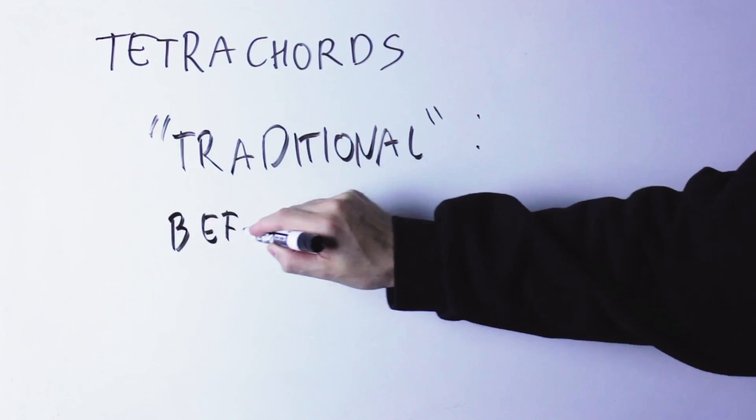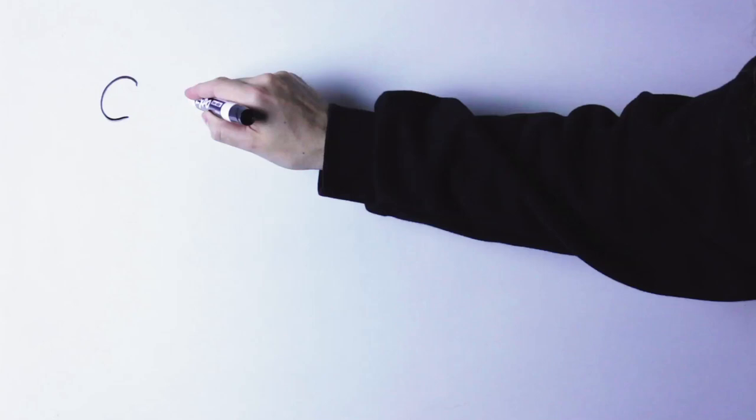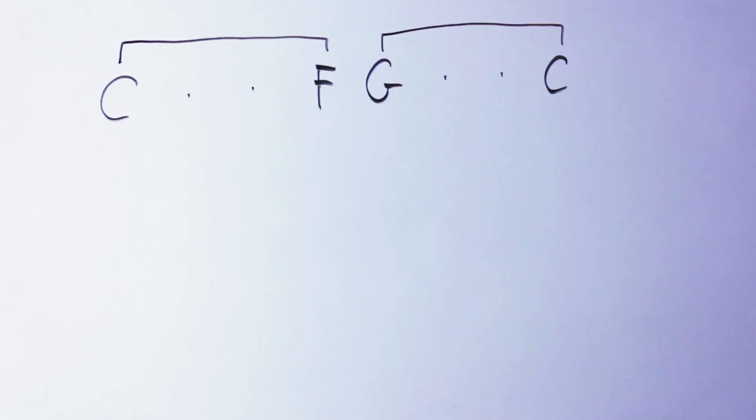The theory of tetrachords is an explanation on how to construct a traditional scale, and here we define traditional scale as the scale mostly used before the 20th century. The construction of the scale goes this way. First, you start from the root, and in this case you're going to use C, and you're going to mark the fifth, G, and the fourth, F. Now, between C and F, you put in a tetrachord, and between G and C, you put in another tetrachord.